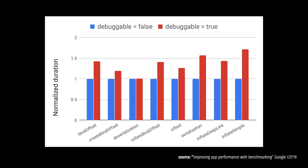Here you can see a graph from the Google I/O talk "Improving App Performance with Benchmarking." This graph shows the benchmark duration for some method calls, each measured for debuggable true and false. As you can see, for some methods being in debug mode added almost no overhead at all, but for some the measured value increased by even 40 or even more percent.